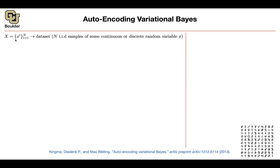Once you learn that distribution, you can generate samples that look like real data. Our objective is: somebody gives us unlabeled data — IID samples from a continuous or discrete distribution — and we want to learn the underlying distribution. Because we want to use neural networks and neural networks need an input, we introduce some unobserved latent continuous random variable Z, which can serve as the input to our neural network.